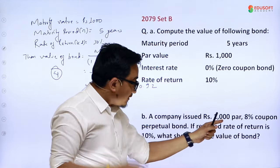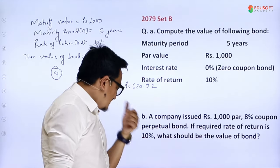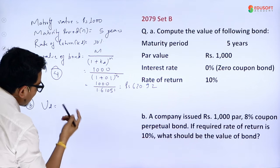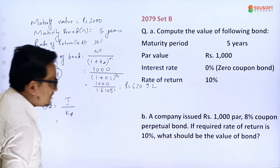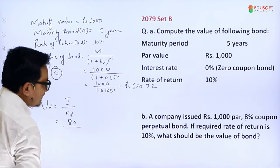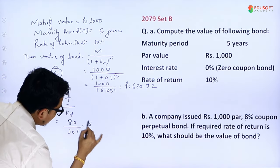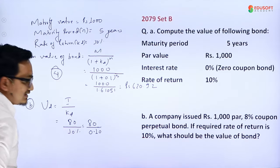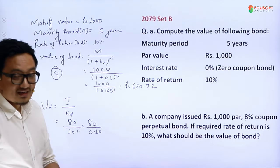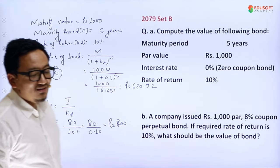Another question: A company issued RS 1000 par value, 8% coupon perpetual bond. Perpetual bond formula is interest divided by kd. If the required rate of return is 10%, value of bond equals interest divided by kd. Interest equals 1000 × 8% equals RS 80. Divided by 0.10 equals RS 800.